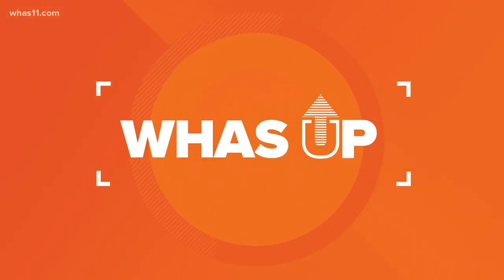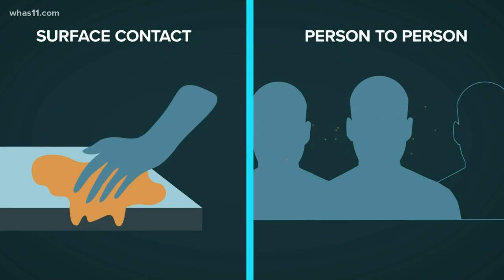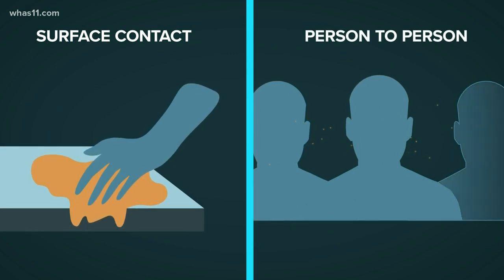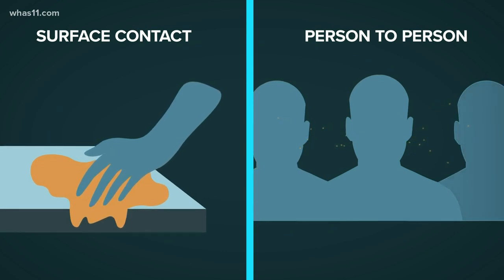There are two main ways that you can catch the coronavirus: touching a contaminated surface and being too close to another person. But health experts worry about one way more than the other. Person-to-person contact spreads the virus more easily, and it's harder to prevent.